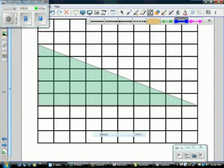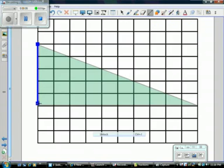If I have a triangle that doesn't have a rectangle behind it, I can use my grid lines to draw my own rectangle around my triangle.